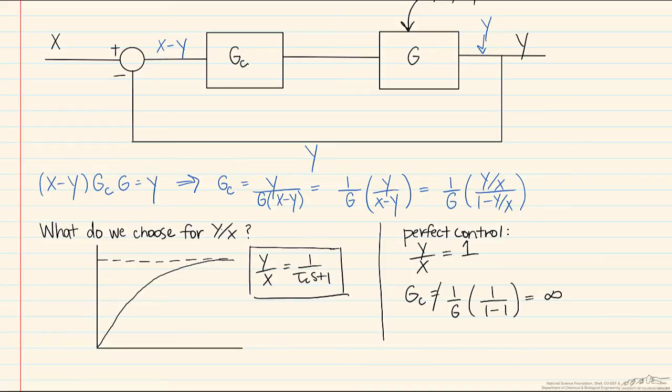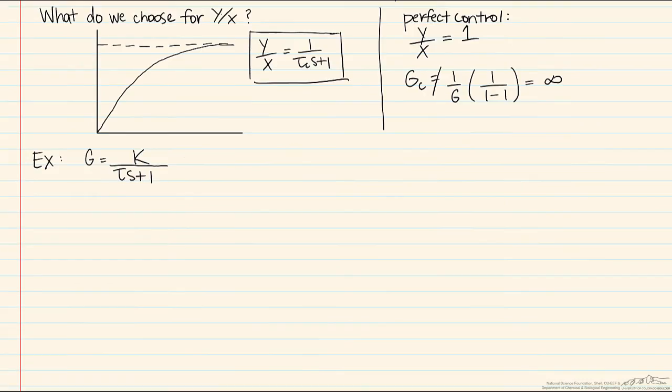Which physically makes sense because a feedback controller does not work until the final value, the controlled variable, actually sees a change to it, besides that it will not act. So thus, it makes sense for a feedback only system to not have perfect control. To show an example of how controller synthesis works.